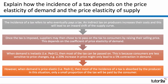Once the tax is imposed, suppliers may then choose to pass on the tax to consumers by raising their selling price. This depends on the coefficient of price elasticity of demand. When demand is inelastic — in other words the coefficient is less than one — then most of the tax can be passed on because consumers are less sensitive to price changes. For example, a 20% increase in price might only lead to a 5% contraction in demand, giving a coefficient of elasticity of 0.25.